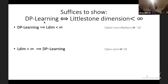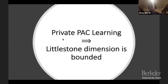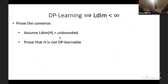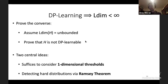We proved the two directions in two separate papers. The first direction — if a class is differentially private PAC learnable then the Littlestone dimension is finite — was proved first. Two central ideas: first, it suffices to focus on one-dimensional thresholds; second, we detect hard distributions in a non-standard way via Ramsey theory.